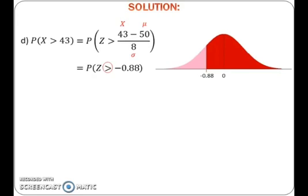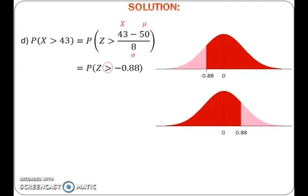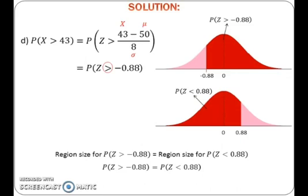To find probability, refer to the standard normal distribution table. Remember that the table gives probability of z greater than a certain positive value. For probability of z greater than negative 0.88, if we reflect the graph to the positive side, we can see that the region for probability of z greater than negative 0.88 is the same as the region for probability of z less than positive 0.88. The table cannot give probability of z less than 0.88 directly, but since the table can give probability of z greater than 0.88, take 1 minus probability of z greater than 0.88. Read probability of z greater than 0.88 from the table and calculate the probability.